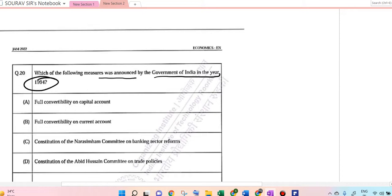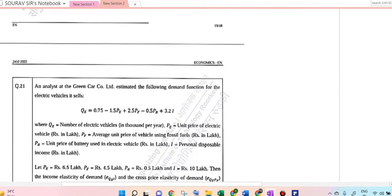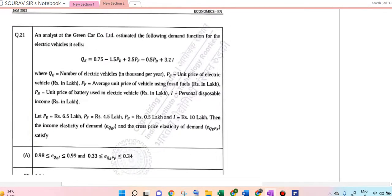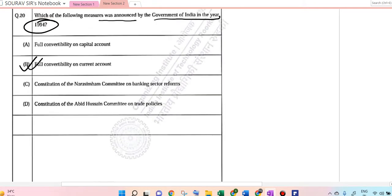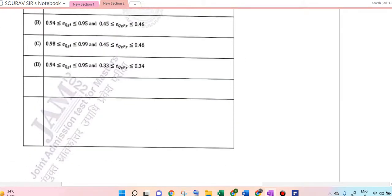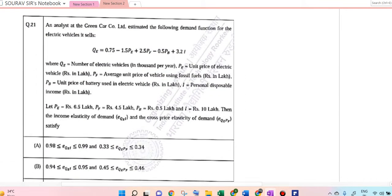Full convertibility on current account was taken in 1994. Next we have a question from Green Car Co. Ltd. Let's solve it. Question 21: An analyst at Green Car Company estimated the following demand function for electric vehicles.